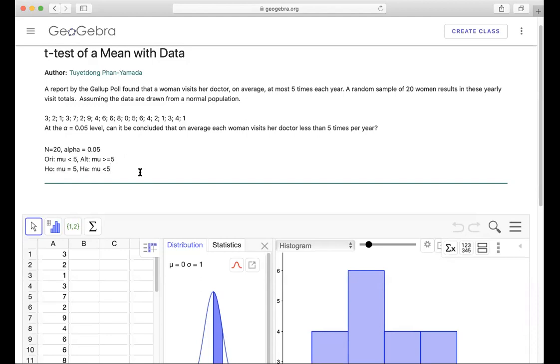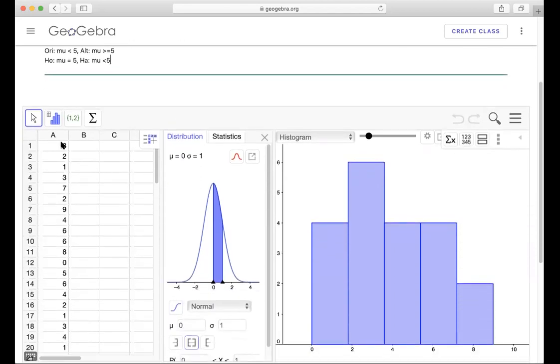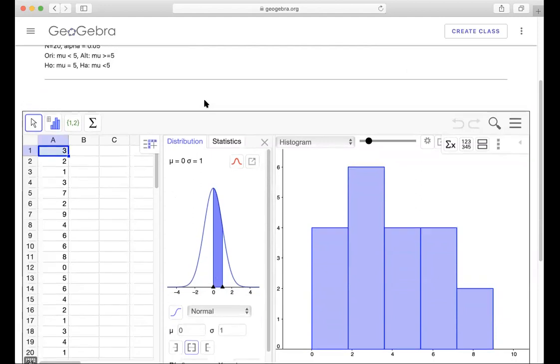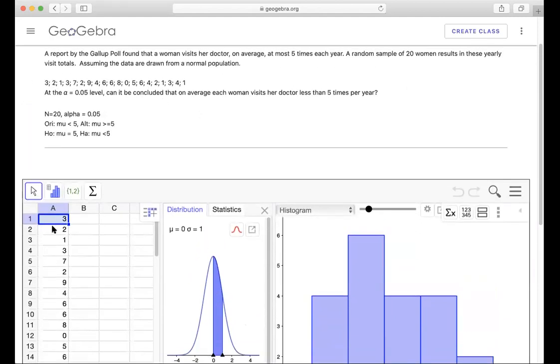They don't give us the sample mean or sample standard deviation, but we have the data. And they don't give us the population standard deviation, so we have to use the t-test. You can either enter this data into the spreadsheet or copy and paste if you have the data from the textbook. I've already provided it for you.